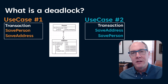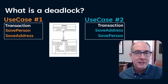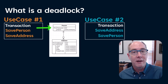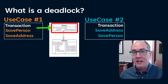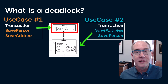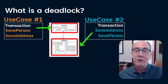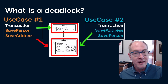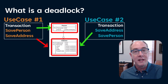Use case one starts a transaction and attempts to save the row in the person table. When that happens, SQL locks that row. Use case two, in the meantime, starts its transaction but begins by saving the address row, so the address row is locked. Now use case one goes to save the address, but it can't because that address row is locked — SQL prevents it from being updated.